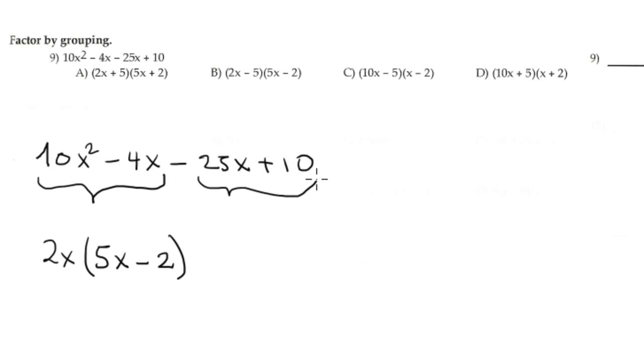And what is the GCF in the second couple? Well, maybe 5, but sometimes you need to see. It's much better to factor out 5 or negative 5. In this case, much better negative 5, why?